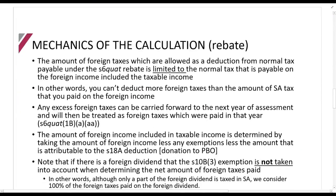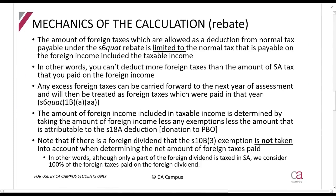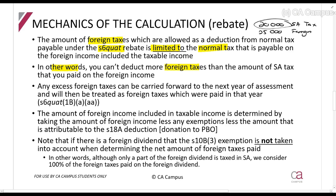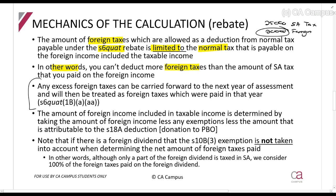The mechanics are straightforward. The amount of foreign taxes you can claim under Section 6quat is limited to the normal tax payable on that income in South Africa - you cannot deduct more foreign taxes than the South African tax on that amount. For example, if South African tax is R20,000 and foreign tax is R25,000, you only deduct R20,000. Conversely, if SA tax is R25,000 and foreign tax is R20,000, you use R20,000. You always use the lower of the two. Any foreign taxes not claimable in the current year are carried forward to the next year.